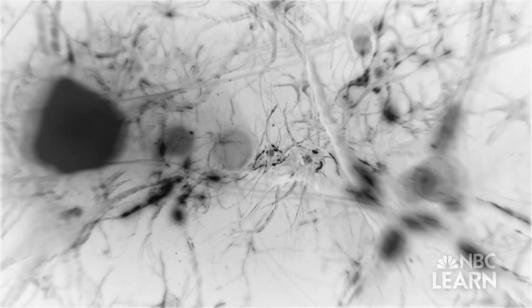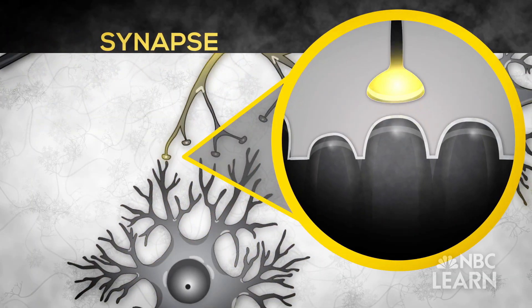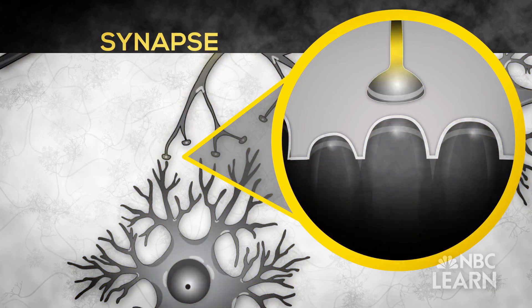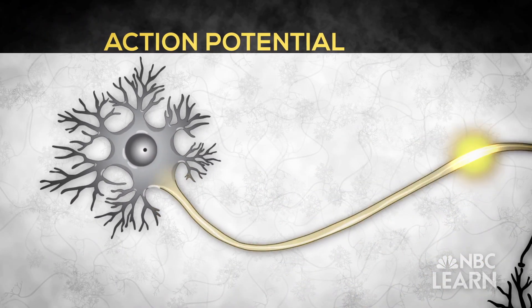Neurons communicate with each other through a junction called a synapse, where information signals are transmitted and received. An electrical signal called an action potential travels down the axon of the talking neuron until it reaches the axon terminal.